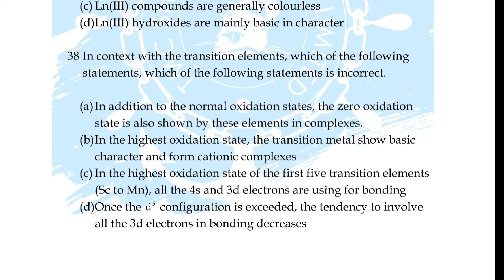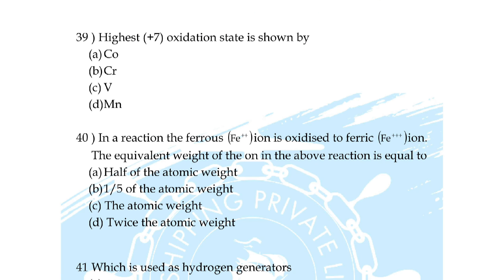Question number 38: in context with the transition elements, which statement is incorrect — option A: in addition to normal oxidation states, the zero oxidation state is also shown in complexes, option B: in the highest oxidation state the transition metals show basic character and form cationic complexes, option C: in the highest oxidation states of the first five transition elements Sc to Mn all the 4s and 3d electrons are used for bonding, option D: once the d⁵ configuration is exceeded the tendency to involve all 3d electrons in bonding decreases? Correct answer is option B.